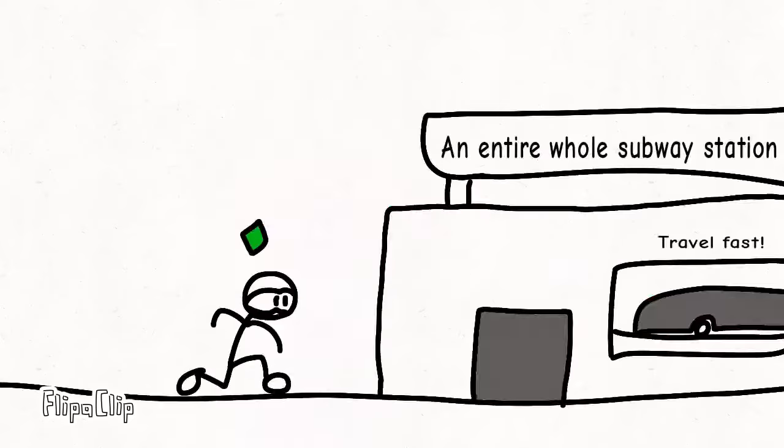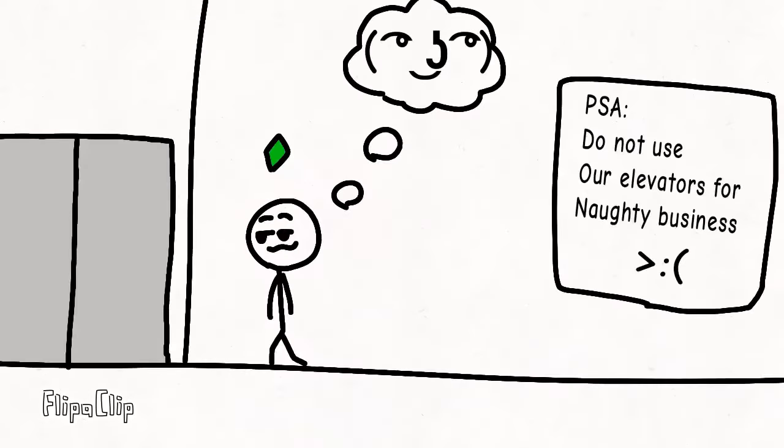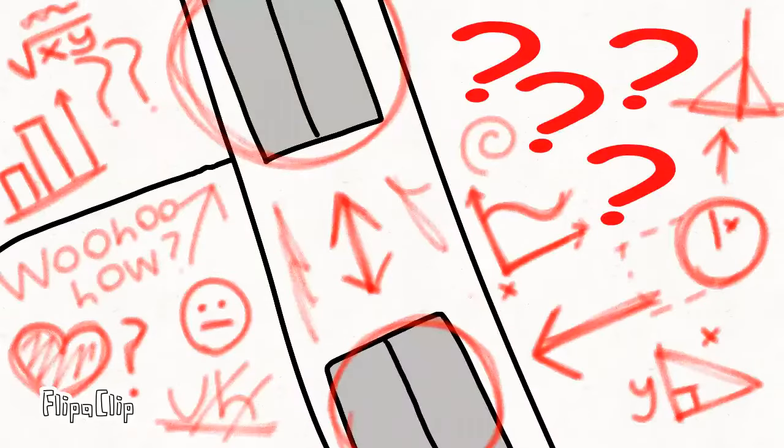Kleptomaniac sims can no longer steal subway stations from lots. Sims can no longer woohoo in the elevator with a sim who is on a different floor.